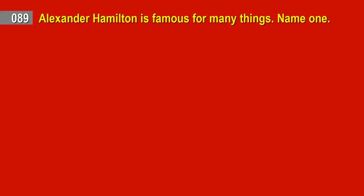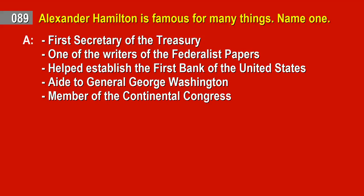Question 89. Alexander Hamilton is famous for many things. Name one. Answer: First Secretary of the Treasury. One of the writers of the Federalist Papers. Helped establish the First Bank of the United States. Aid to General George Washington. Member of the Continental Congress.